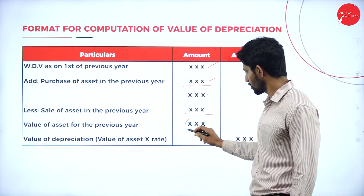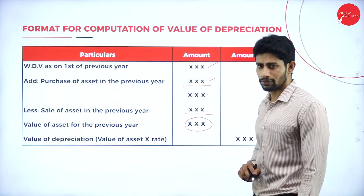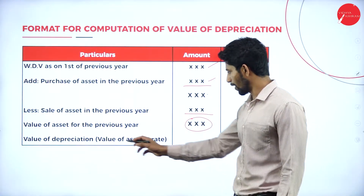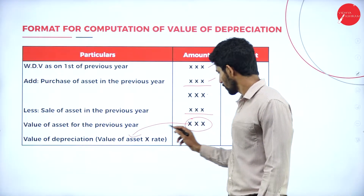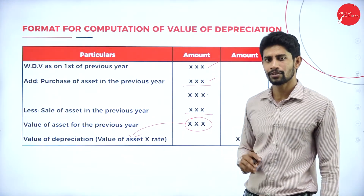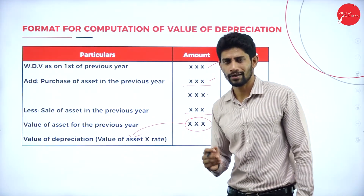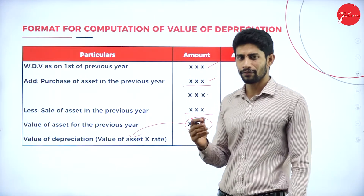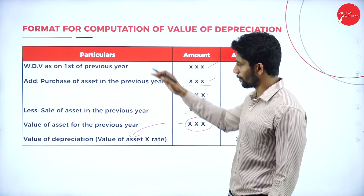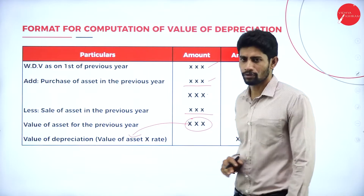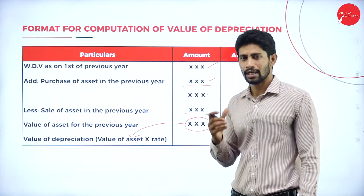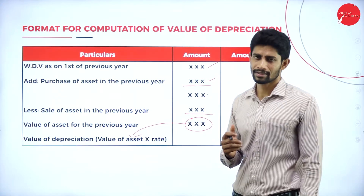After deducting the sales value, you will get some balance. On this balance, you are supposed to calculate the rate of depreciation — the value of the asset into rate of depreciation, whether it is 5%, 10%, or 15% based on the asset. This is the format for computation of depreciation of any particular asset under income tax purview.